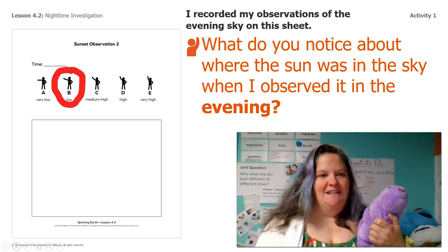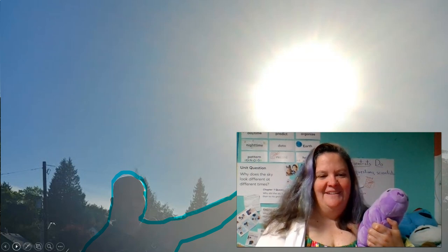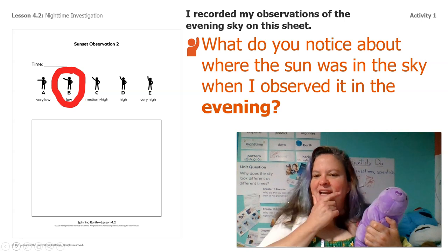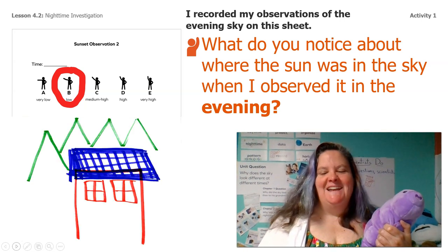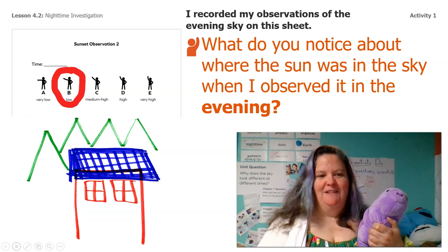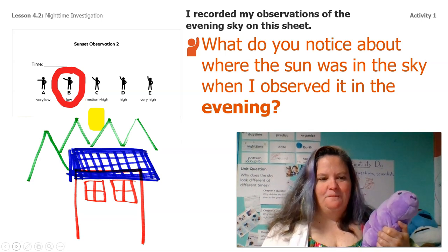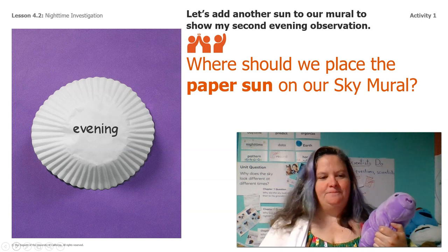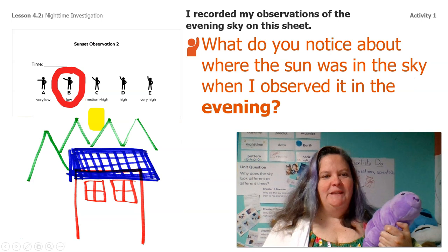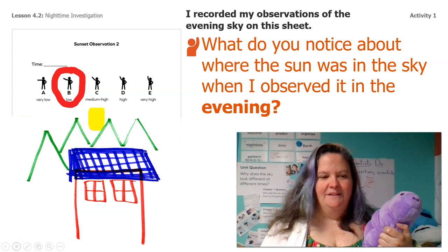So I said that it was low in the sky. Do you guys agree? Do you agree that he was pointing to low? And then what's the next step? So after I say it's low, then I sketch the horizon, right? So where he was standing, right in front of that big orange house. And then there's where he saw that big bright sun. So where should I have placed that paper sun for the evening on our sky mural? We want it to be low and right above the orange house on the horizon.